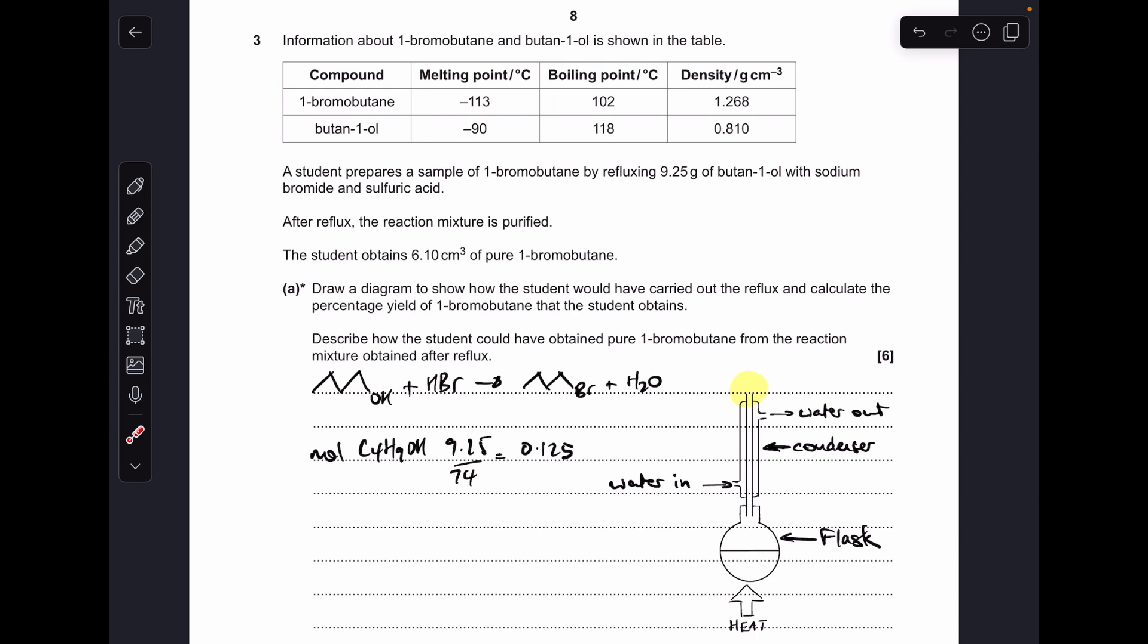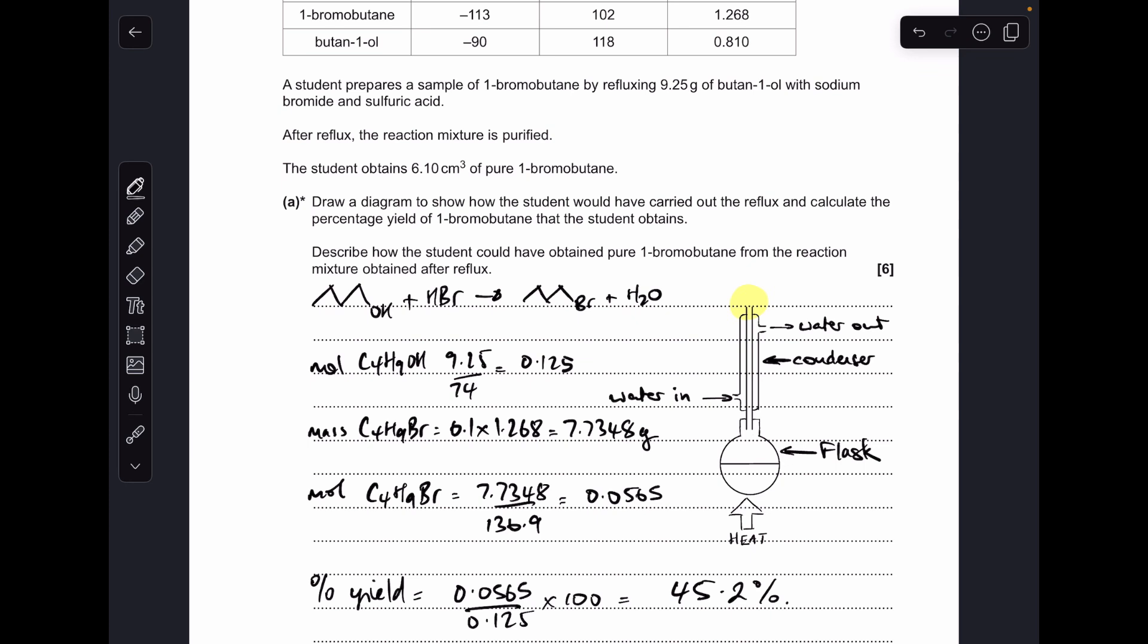So in terms of the 1-bromobutane we were told the student made 6.10 cm³. So that's not mass is it? So we're going to need to use the density information to turn that into grams. So the mass equals volume times density which means the students managed to make 7.7348 grams of the 1-bromobutane. Now we'll turn that into moles, mass over MR again which comes out at 0.0565 moles. Percentage yield is the actual over the expected multiplied by 100 which gives a percentage yield of 45.2%.